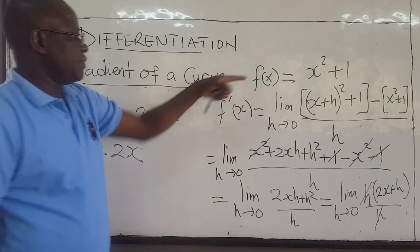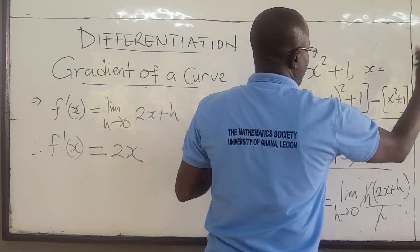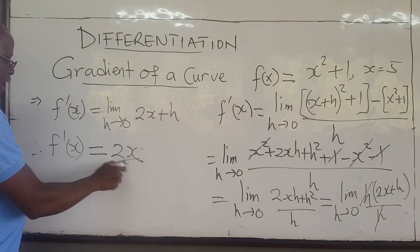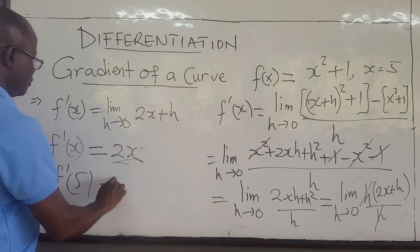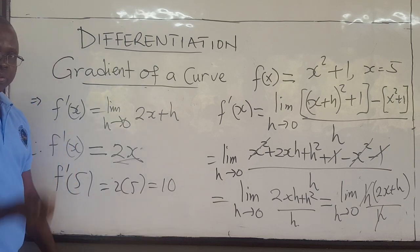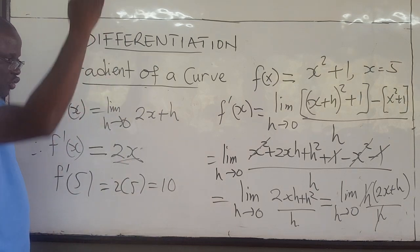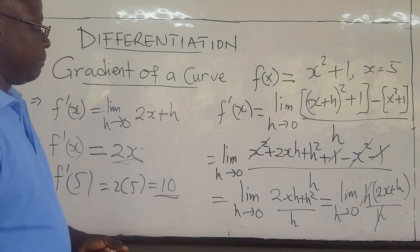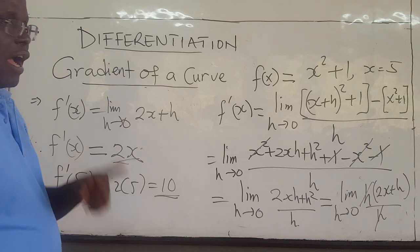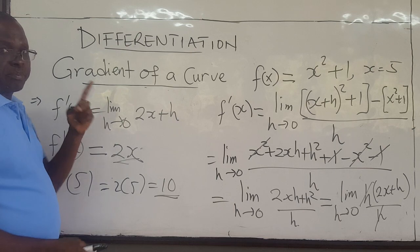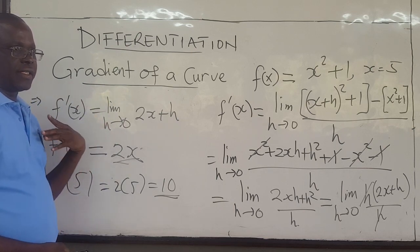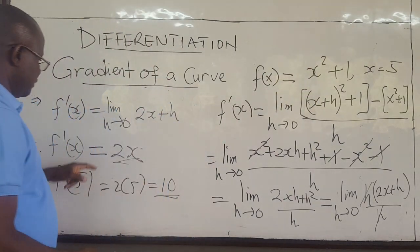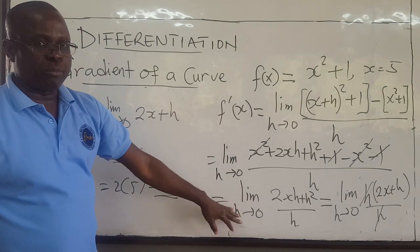So the derivative — the gradient of this function f(x) — is just 2x. If you wanted the slope at a particular point, say x equals five, then f prime of five will be two times five, which equals ten. So when x is five, the slope of the curve is ten. That is how you find the derivative from first principles. In subsequent videos, we'll look at some laws of differentiation that will help us find the derivative without using the first principles approach.